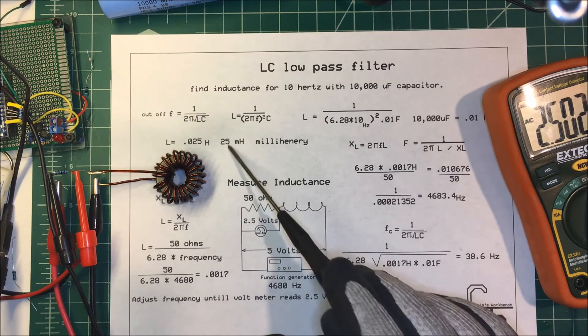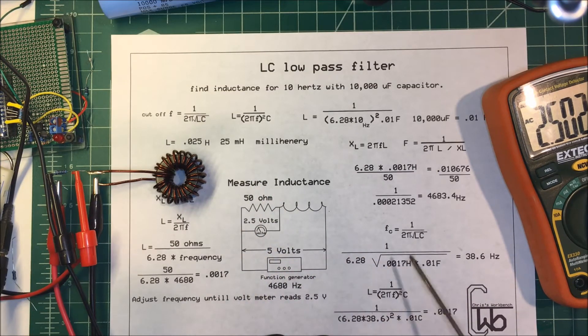We didn't quite reach 25 millihenrys, but let's see what frequency we can get. Using this formula, we're solving for frequency because we know our inductance and capacitance. We have 6.28 times the square root of inductance times capacitance, and it comes out to 38.6 hertz, which I think will be fine for my use.